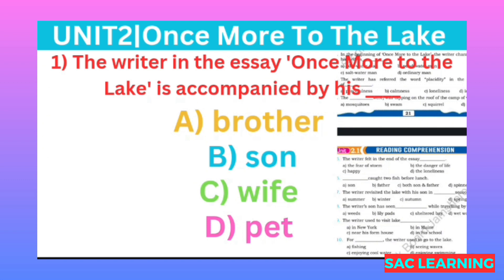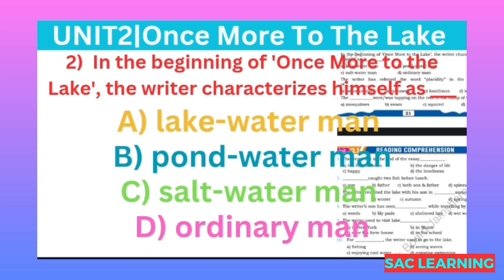MCQ number one: In the essay 'Once More to the Lake,' the writer is accompanied by whom? (Once More to the Lake mein musnif kis ke saath hota hai?) Option A: brother, B: son, C: wife, D: paid. Correct option is B, son. MCQ number two: In the beginning of 'Once More to the Lake,' the writer characterizes himself as what? Option A: lake water, B: pond water, C: salt water, D: ordinary. Correct option is A, lake water.